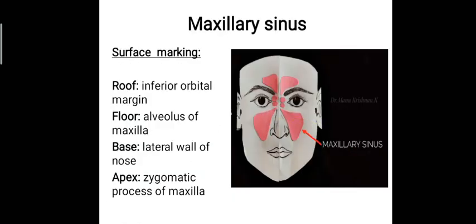The second sinus is the maxillary sinus, which can be marked on the surface by four points: the roof by the inferior orbital margin; the floor by the alveolus of the maxilla; the base formed by the lateral wall of the nose; and the apex formed by the zygomatic process of the maxilla.